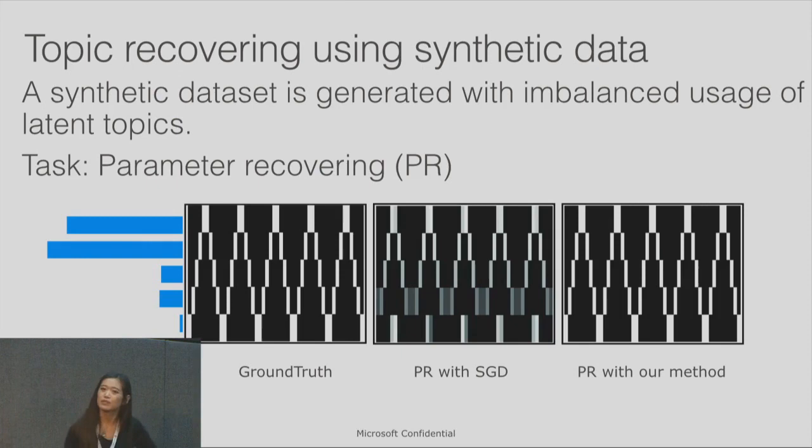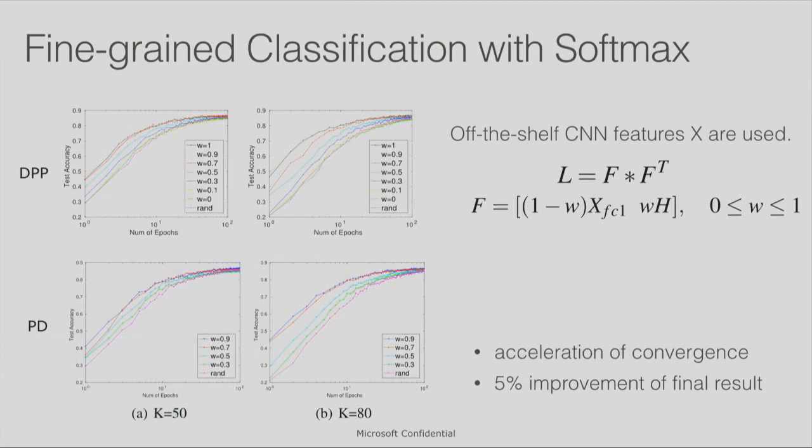We also show, this is an experiment, fine-grained classification with softmax. The first series is a result with determinant point process. The second is with Poisson disk sampling. We can see that the pink line in the bottom is the baseline. We can see that our method converged much faster than the baseline method. At the same time, we actually have a little bit of improvement over the final result.